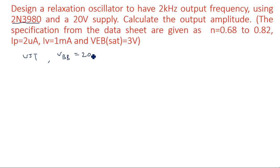So V_BB is given as 20 volts, frequency of oscillations f equals 2 kilohertz. Calculate the output amplitude, which is the difference between the maximum voltage and minimum voltage V_P and V_V. The specifications from the data sheet are given as eta value equals 0.68 to 0.82, I_P equals 2 microamperes, I_V equals 1 milliampere, and V_EB saturation voltage equals 3 volts.